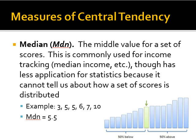The median, sometimes abbreviated as MDN, is the middle value for a set of scores. This is commonly used for income tracking — median income, for example — though it has less application for statistics in the social sciences because it cannot tell us how a set of scores is distributed, and therefore it's hard to know what a person's score means compared to others.